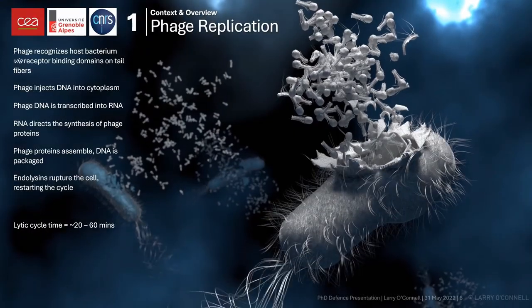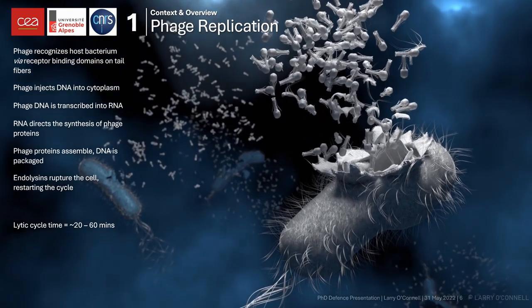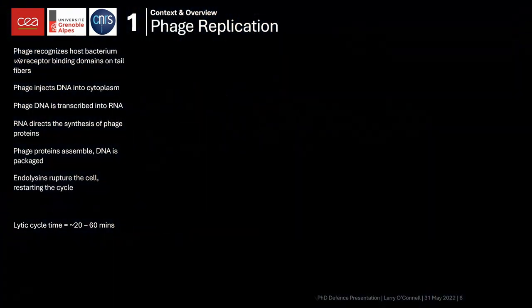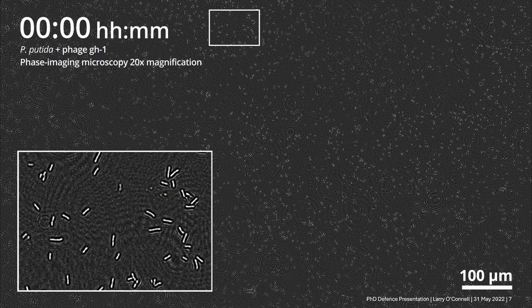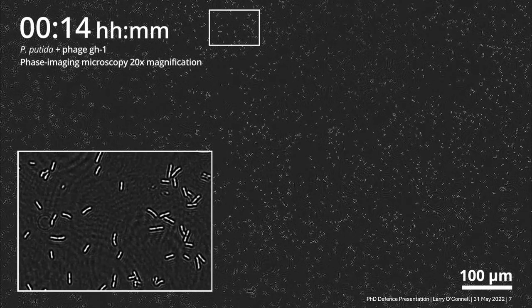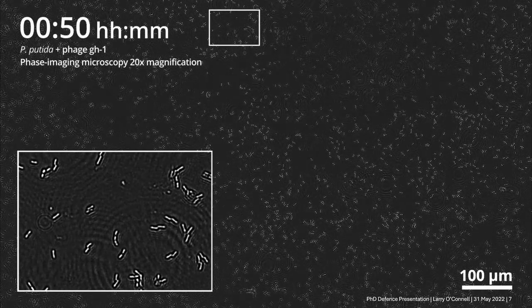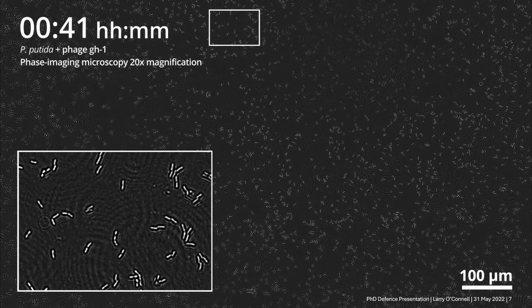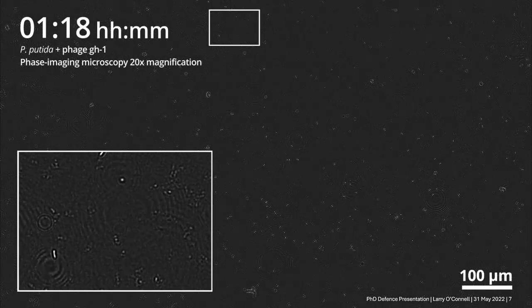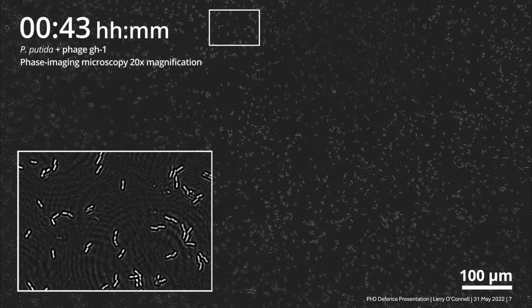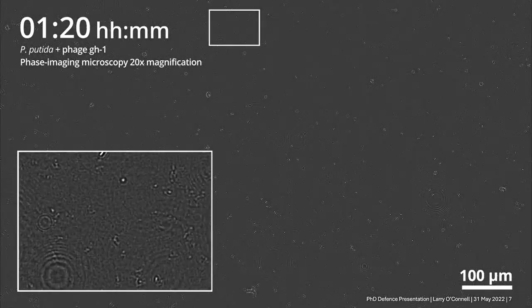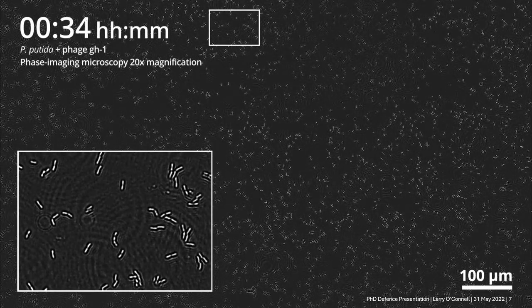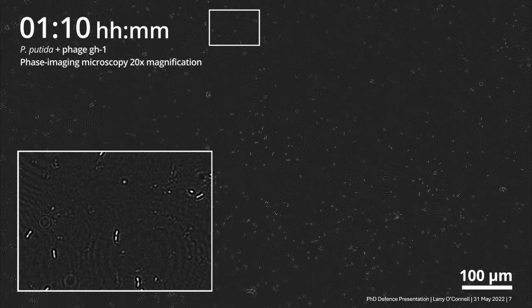Finally, the phages lyse — rupture — the bacterial cell from within, killing it and releasing new phage particles to repeat the cycle. You can see this lysis very clearly in microscopy. We combined a suspension of phages with a culture of its host bacterium on a microscope, and around the one-hour mark there's a catastrophic drop in bacterial population due to this lytic effect. The bacteria are lysed, but they still release a significant amount of biomaterial into the crude phage lysate.